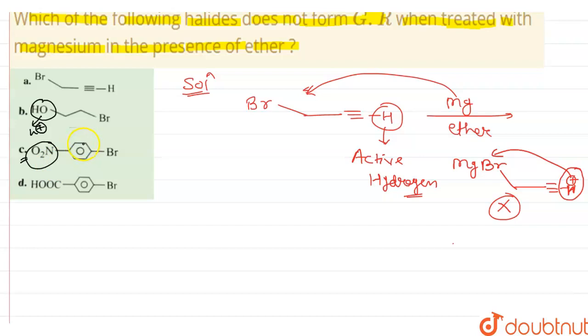Okay, so option C is also correct. Option A, option C, and option D also has active hydrogen as H+ because carboxylic acid is able to release H+ ion.